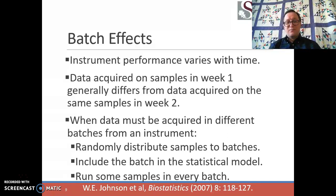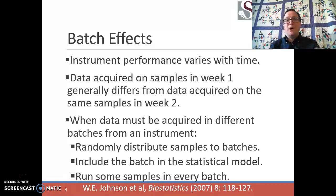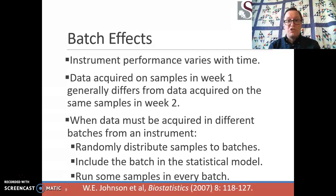Finally, let's talk about batch effects. Instrument performance will vary with time — data acquired from samples in week one will generally differ from data acquired on the same samples in week two. If you run the same sample on different weeks and get different results, you have a batch effect. When you must separate instrument acquisition across multiple batches, don't run all of your cases in week one and all of your controls in week two, because changes in measurement become conflated with cohort. Instead, mix cases and controls randomly in the order the instrument sees them, and inform your statistical model of the batch assignment.